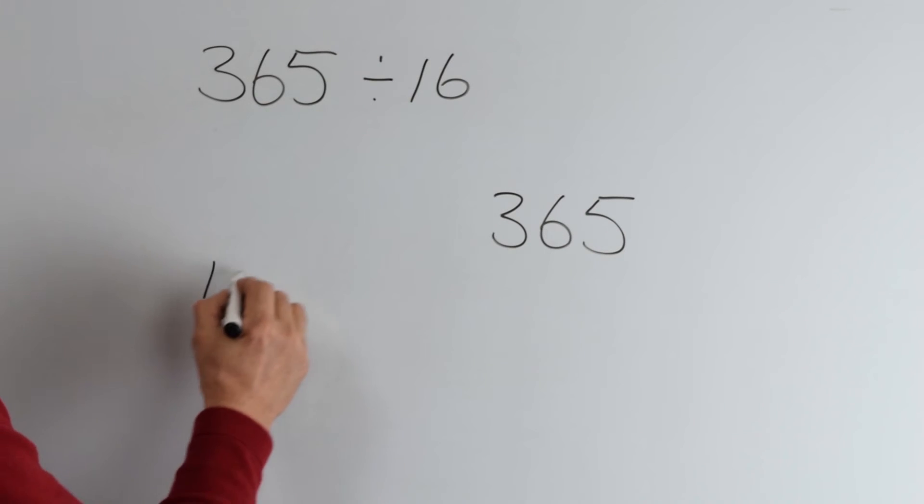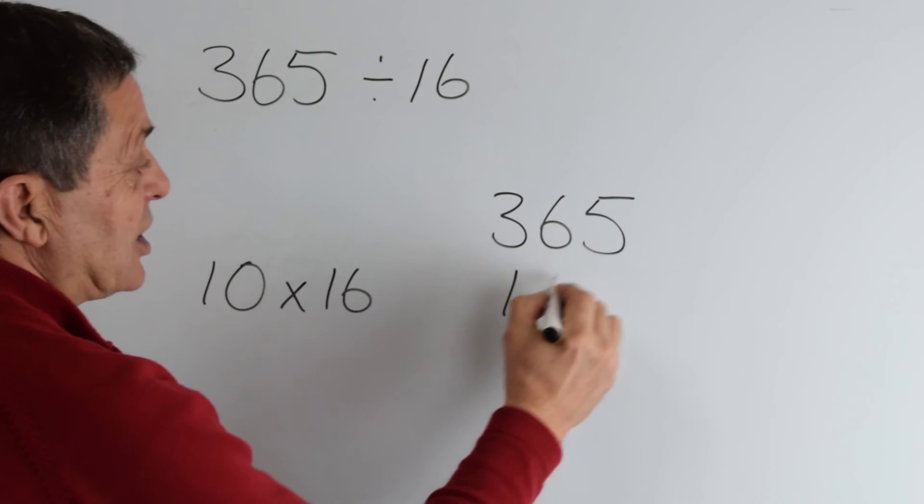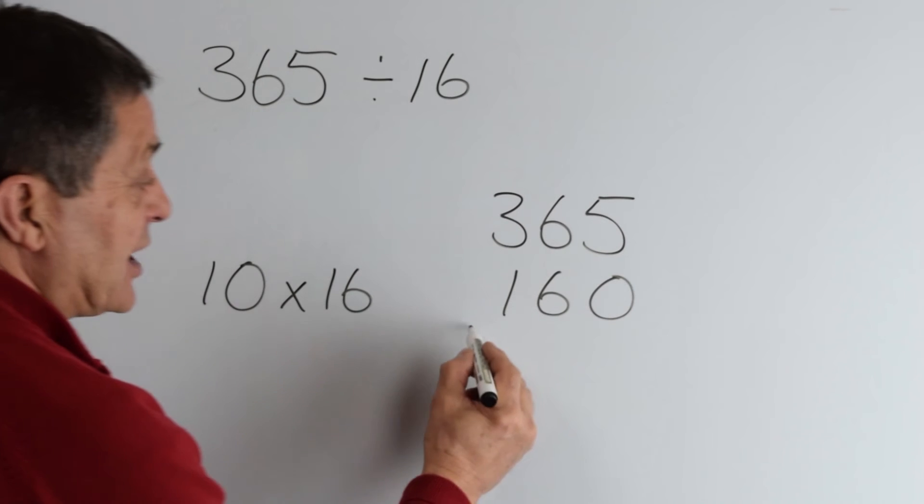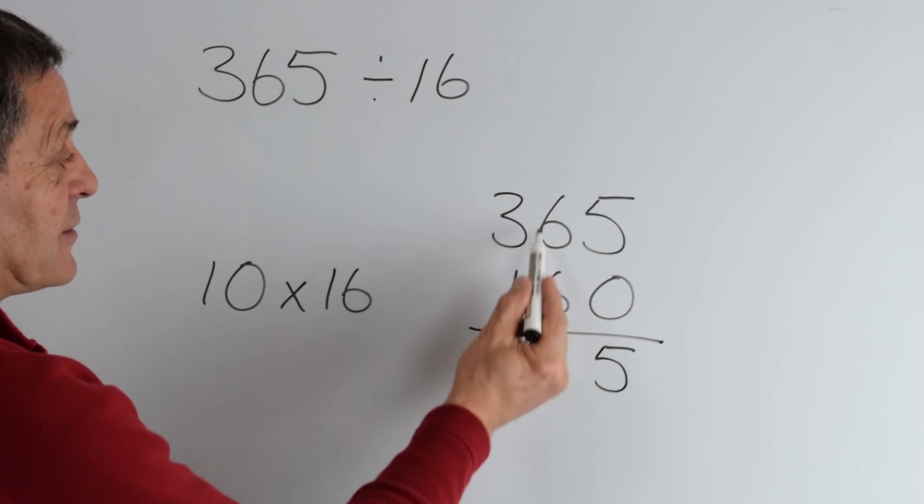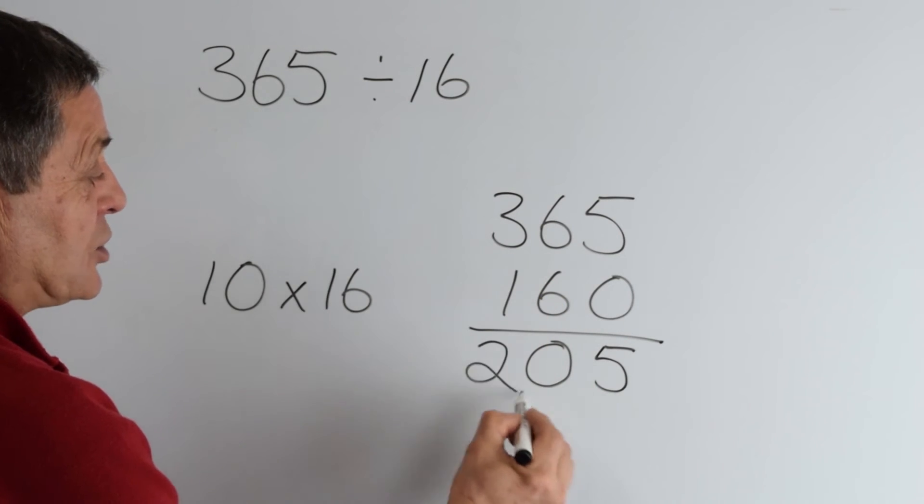Well, we know a simple multiple, 10 multiplied by 16 is 160, because we just add the 0. So let's take that chunk away. 0 from 5 is 5, 6 from 6 is 0, 1 from 3 is 2.